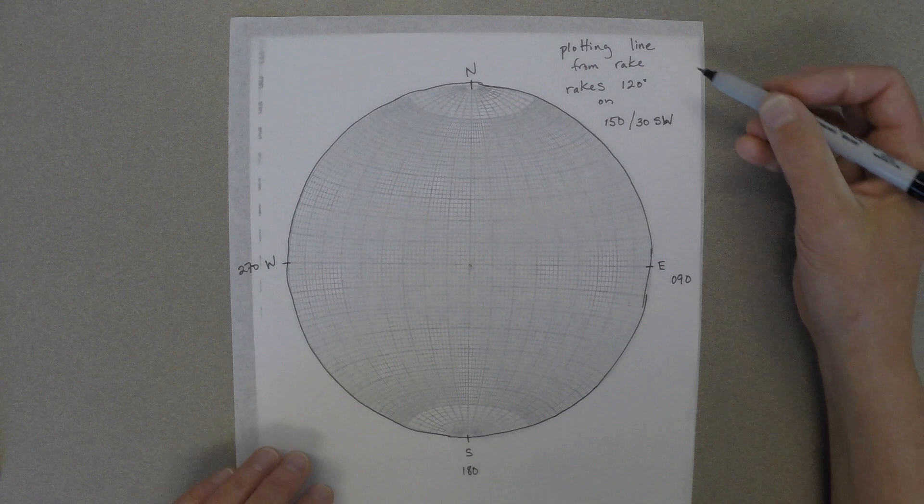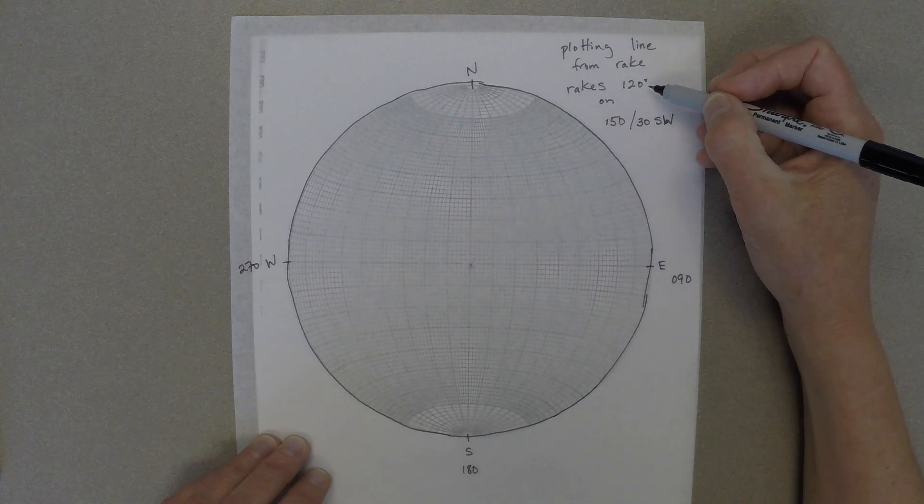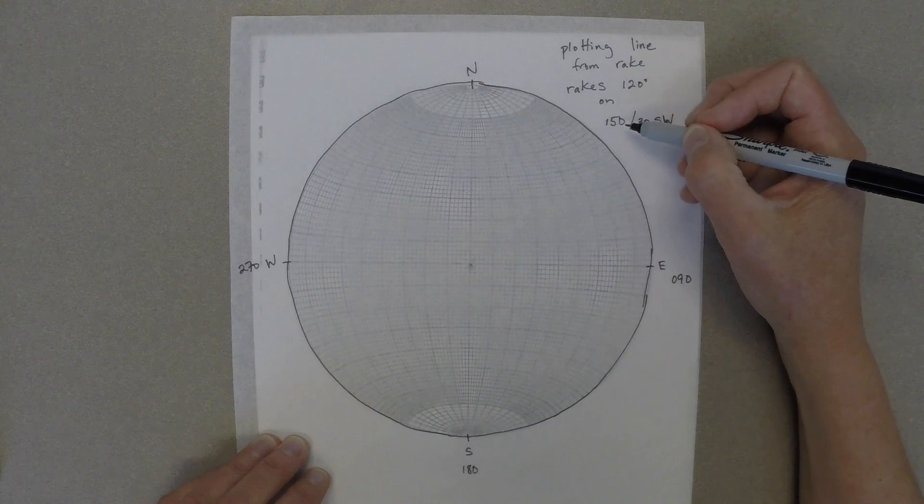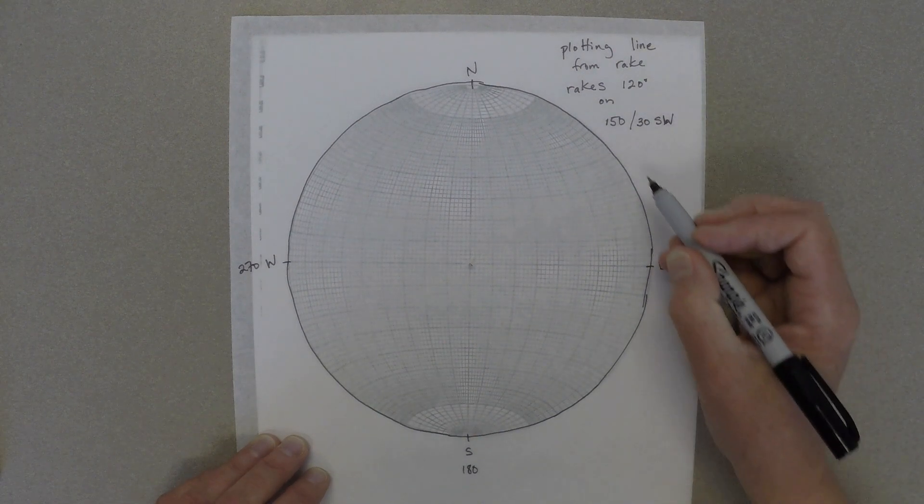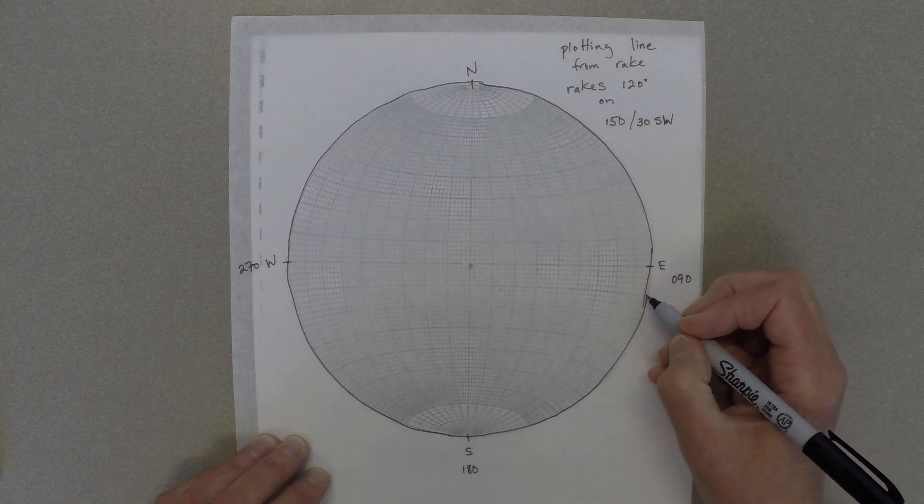In order to plot the rake, we need two pieces of information. We need the rake, which is an angle between zero and 180 degrees, and we need the strike, dip, and dip direction of the plane that that line lies on.